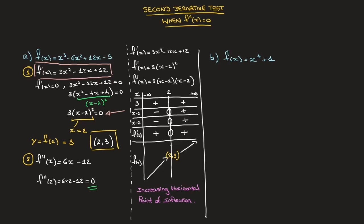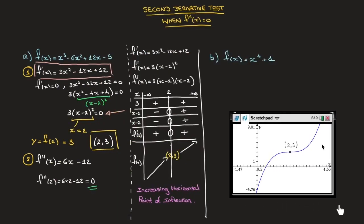If we had a calculator and were able to plot this function, we'd quickly be able to confirm this result. Indeed, looking at the curve, it's clear that the stationary point with coordinates (2, 3) is an increasing horizontal point of inflection.